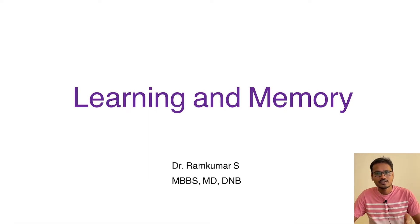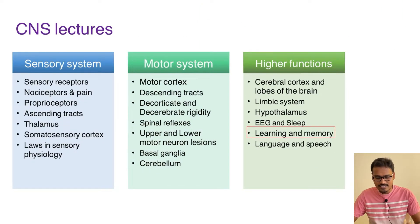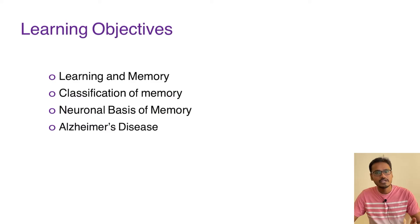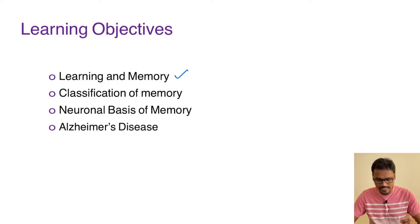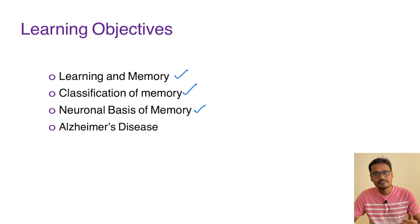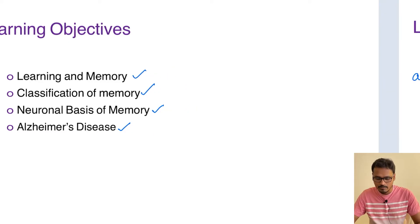Hello everyone. Today we are going to discuss a very interesting topic: learning and memory. We are discussing this under our higher functions in the CNS lectures. Learning and memory will be covered under these subheadings: what is learning and memory, the various classifications of memory, the neuronal basis of memory, and finally an important disorder related to memory loss — Alzheimer's disease. Now let's get into the topic.